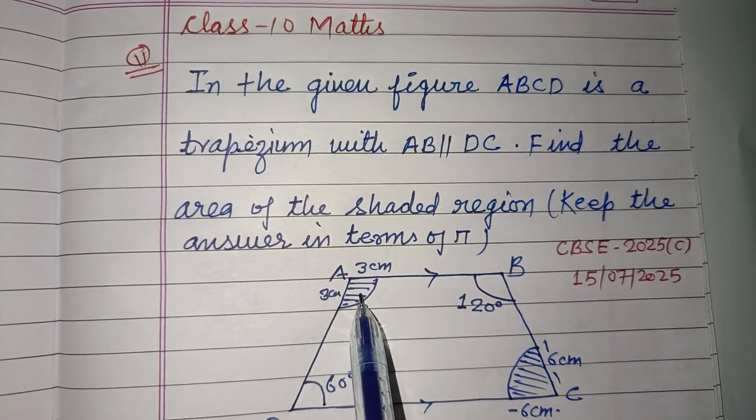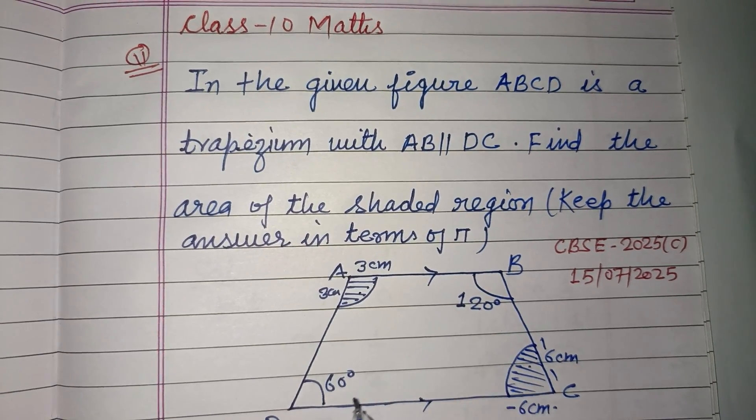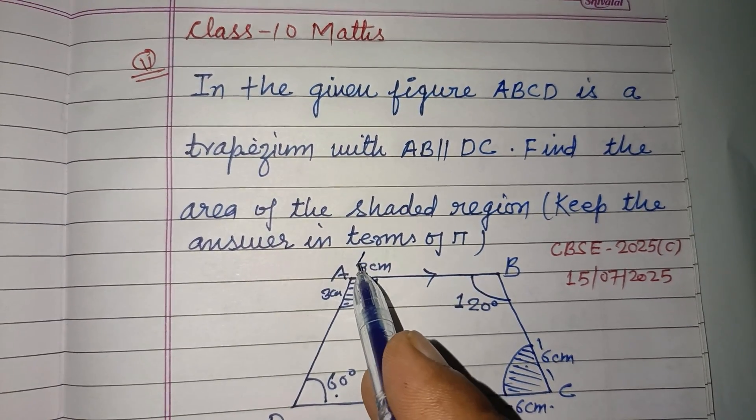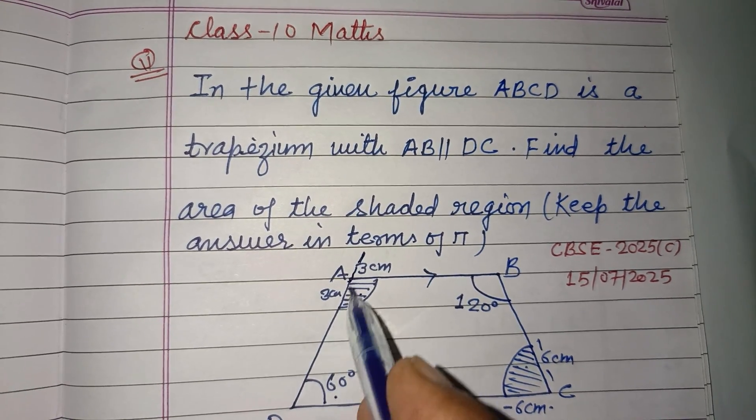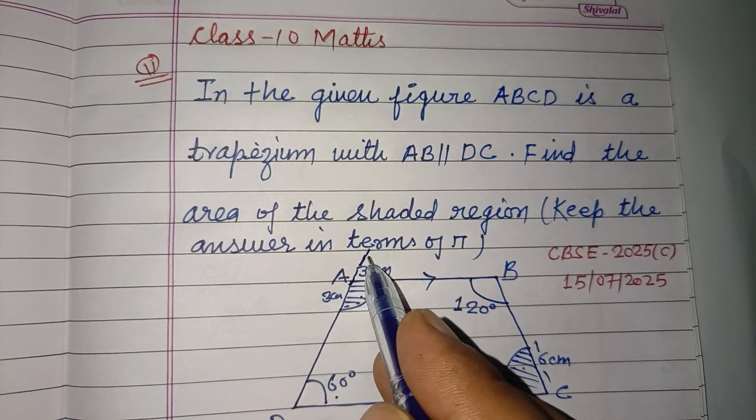So students, these are the shaded regions given. This angle is given as 60°, then if we extend this side AD, this angle is also 60°.